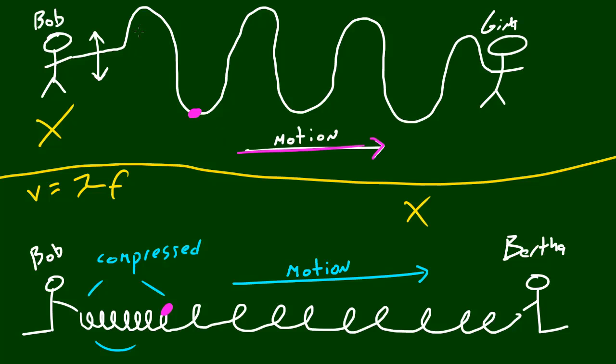Just remember that. Even though it looks like the waves are actually going from Bob to Gina or Bob to Bertha, the matter does not get transferred. No matter whatsoever gets transferred from Bob to Gina, it's only the energy from person A, Bob, to Gina, person B. I like to point that out because this is actually true for all types of waves, that waves do not transfer matter, they just transfer energy from the source, which is in this case, Bob.